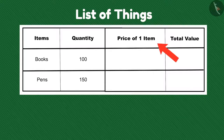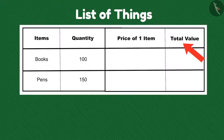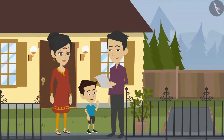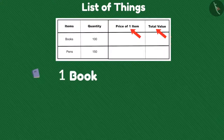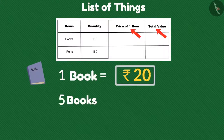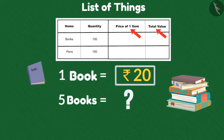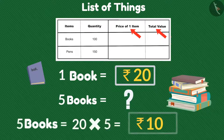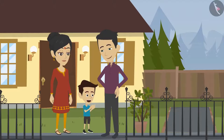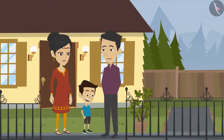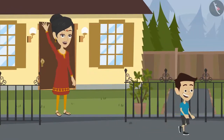For instance, I made this list. I have entered the number of items I need but I need to enter the amount, then I will get to know how much money is required to buy the things. Suppose one book costs rupees 20 and I want to buy five in total, then how much money is required? 20 multiplied by 5 is 100 rupees. Come on, let us go and buy things and see how much money we really need.